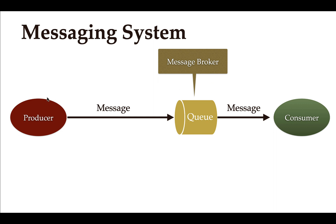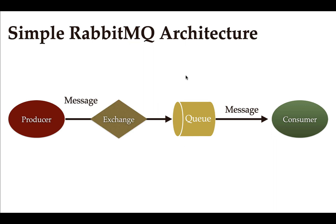The producer will send a message to the message broker, and the consumer will read those messages from the message broker. This is how a typical messaging system looks like. But in the case of RabbitMQ, there is one more component called an exchange.